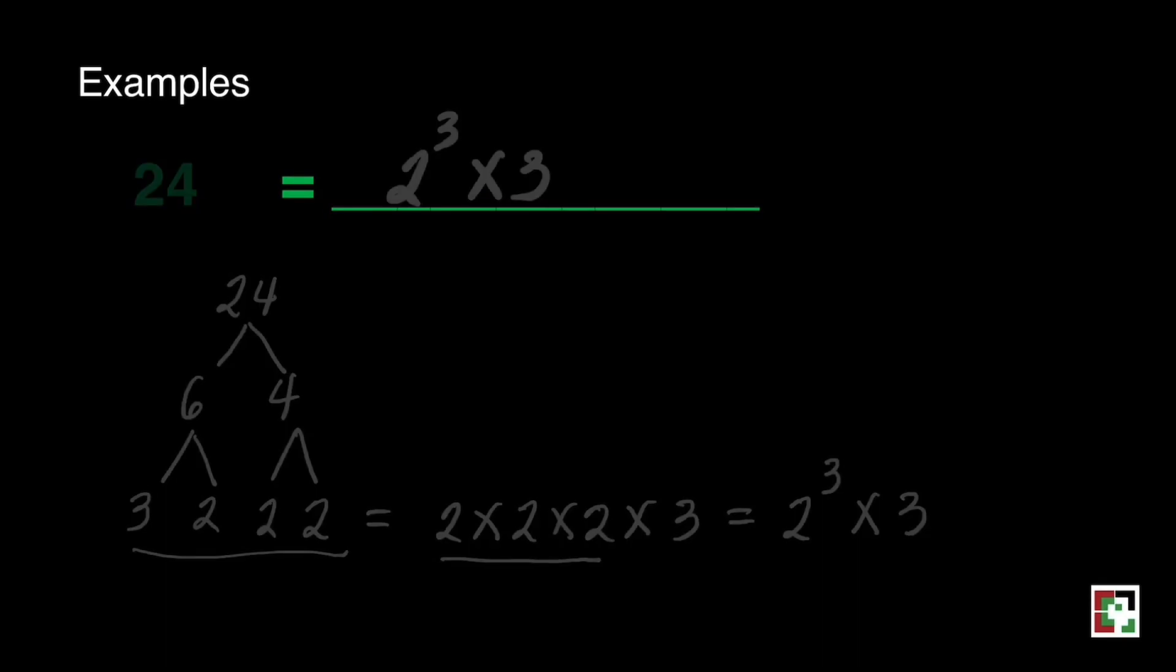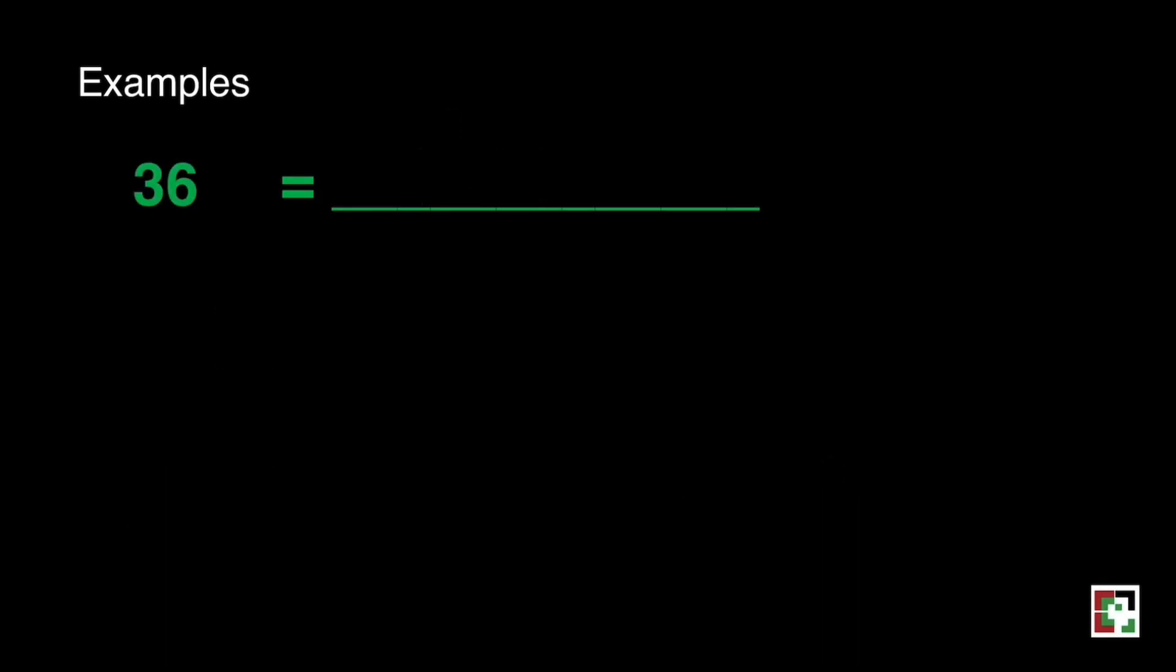Let's have another example. Let us have 36. What are the factors of 36? We can write 36 here. That's 6 times 6. 6 is a composite number. Let's find the factors of 6. That's 3 and 2, and then 3 and 2.